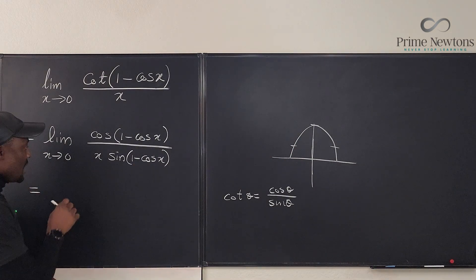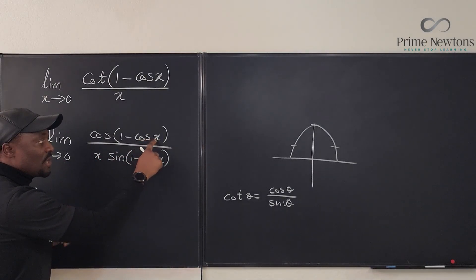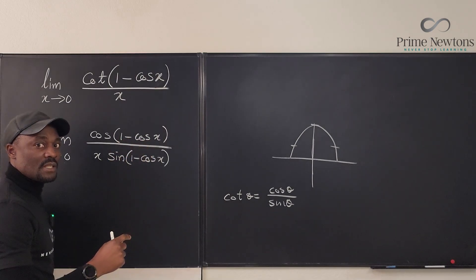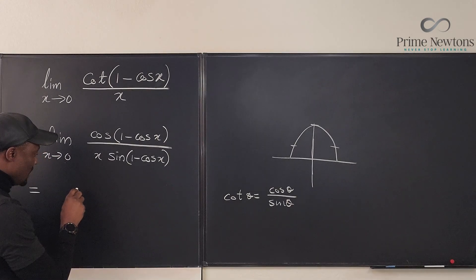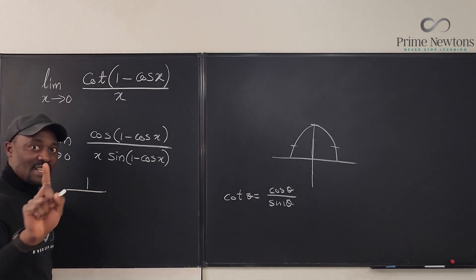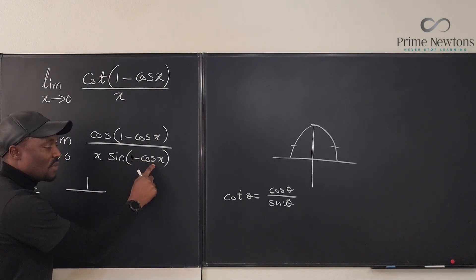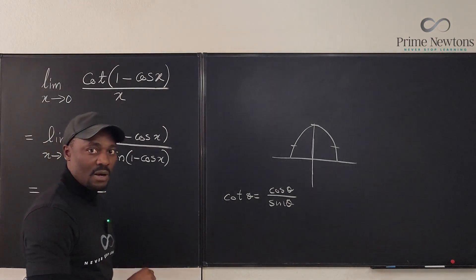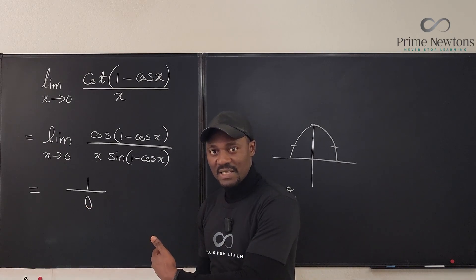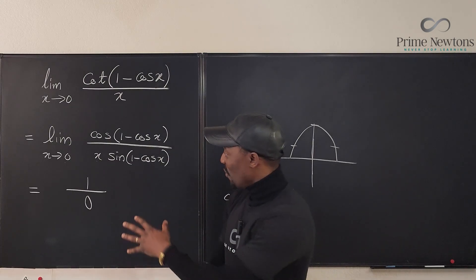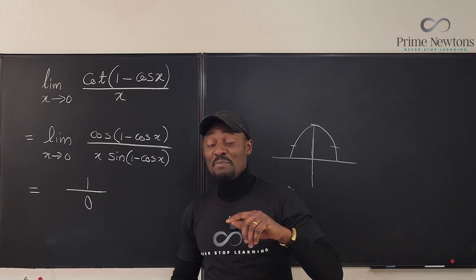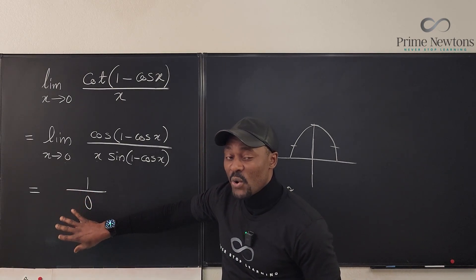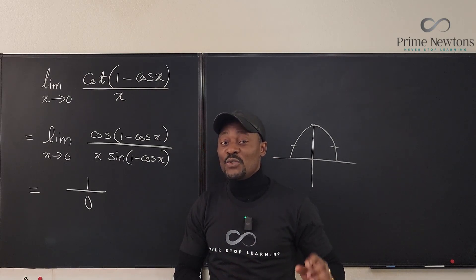Now, can we take the limit? As X goes to zero, the numerator: cosine of (one minus cosine X) — cosine of zero is one, so one minus one is zero, and cosine of zero is one. So the top becomes one. The denominator: X approaches zero, and sine of (one minus cosine X) becomes sine of zero which is zero. So we have zero times zero in the denominator, which is zero. So we end up with one over zero. Is this infinity or undefined? Students often say one over zero means the limit doesn't exist, or it's infinity, or negative infinity. Do not make that conclusion.